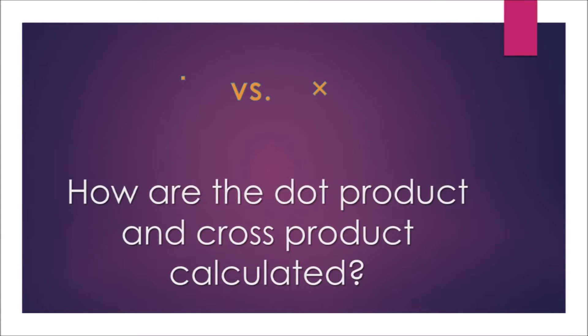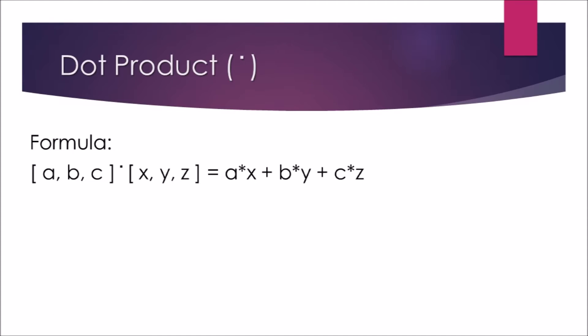How are the dot product and cross product calculated? Dot product: let's take two vectors, one with elements a, b, and c, and the other x, y, and z.